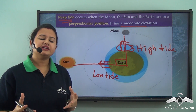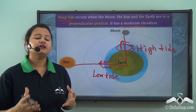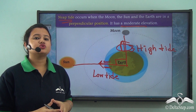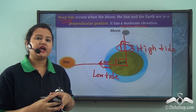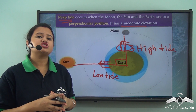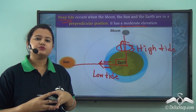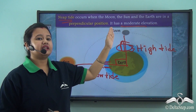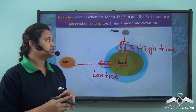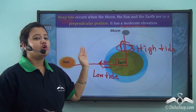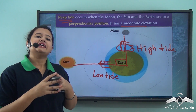Spring tide and neap tide are two types of tide formation. Spring tide occurs when the sun, moon, and earth are in a straight line, so water bodies are attracted by the gravitational pull of the moon and the sun in the same direction, leading to an extreme rise in the water level. Conversely, during neap tide the sun, moon, and earth are in a perpendicular position, so water bodies are attracted in two different directions and the water level does not rise much.